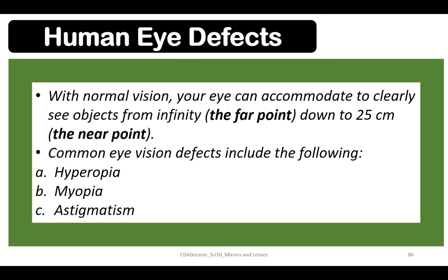Human eye defects: with normal vision, your eye can accommodate to clearly see objects from infinity — the far point — down to 25 centimeters, the near point. The common eye vision defects include hyperopia, myopia, and astigmatism.